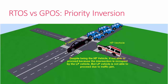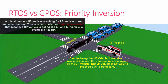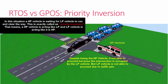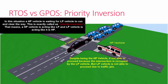You are stuck right now, so the ambulance has to wait until you move out of its way. That means the higher priority vehicle is waiting for the lower priority vehicle to exit — that is exactly what priority inversion is.